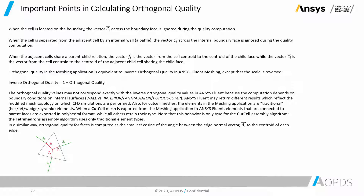Also, for cut cell meshes, the elements in the meshing application are traditional hex, tet, wedge, and pyramid elements. When a cut cell mesh is exported from the meshing application to ANSYS Fluent, the assembly algorithm uses only traditional element types. In a similar way, orthogonal quality for faces is computed as the smallest cosine of the angle between the edge normal vector AI and the vector to the centroid of each edge. A trial element figure shows exactly how these relations are represented.